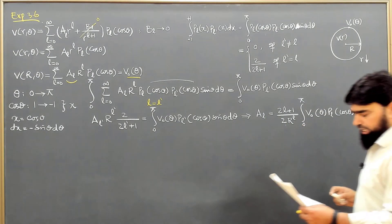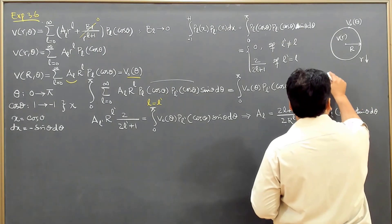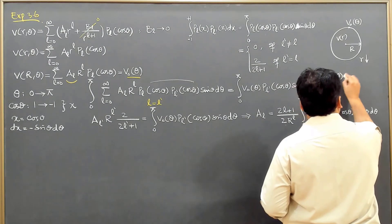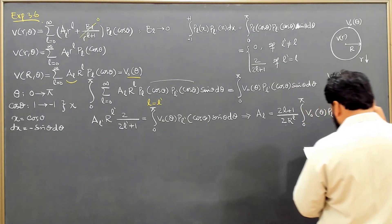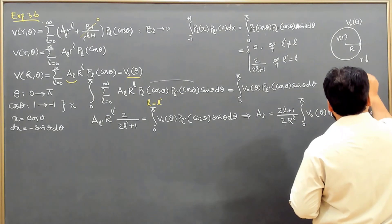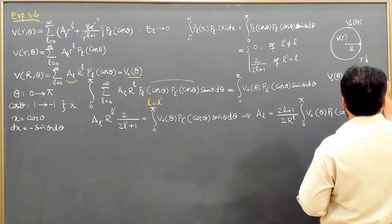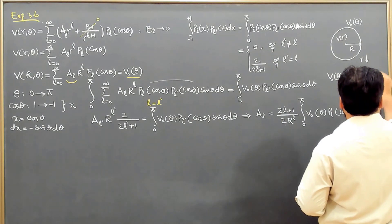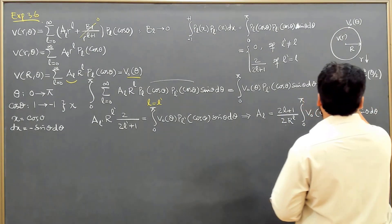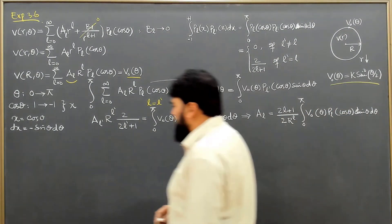Let us say in this example we are given the value of V₀(θ), and it is equal to K sin²(θ/2). This is the value of the potential specified on the surface of the sphere.